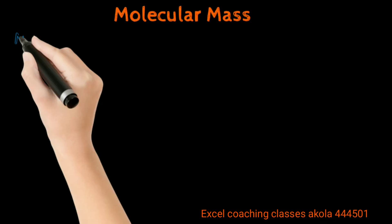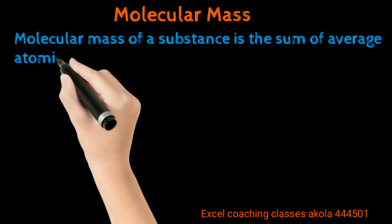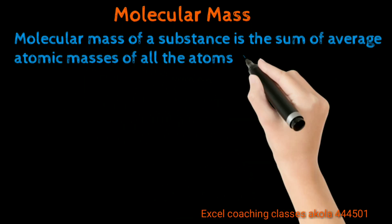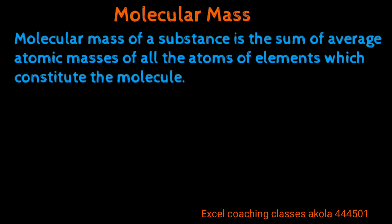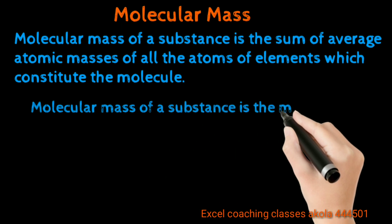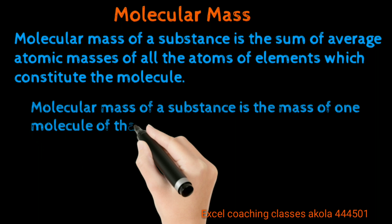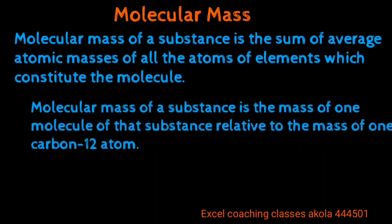Now next: molecular mass. How to calculate the molecular mass of a specific substance? Molecular mass of a substance is the sum of the average atomic masses of all the atoms of elements which constitute the molecule. Molecular mass of a substance is the mass of one molecule of that substance relative to the mass of one carbon-12 atom.